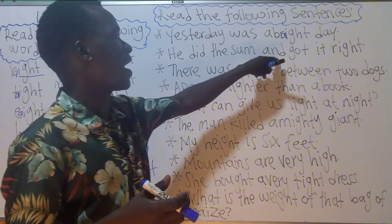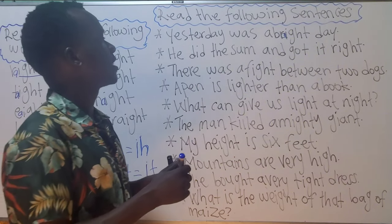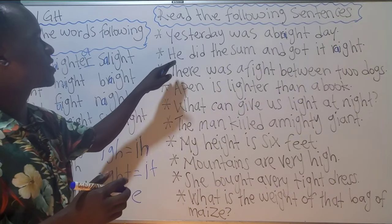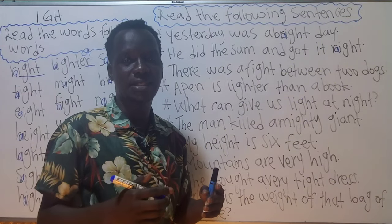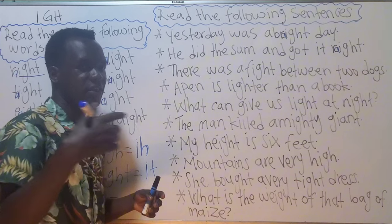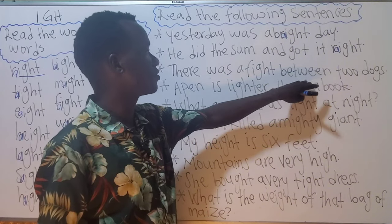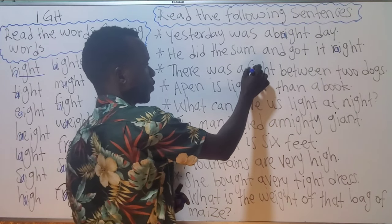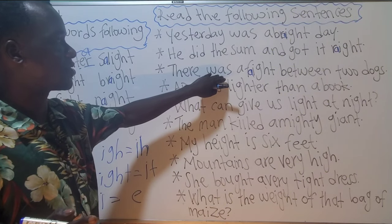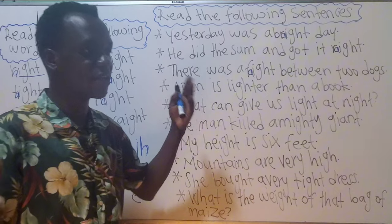Number two: 'He did the sum and got it right.' He did the sum and got it right — invisible A is there. It means he did some mathematics and passed; everything was correct. Number three: 'There was a fight between two dogs' — invisible A is also here. This is a past tense sentence meaning the two dogs were fighting, maybe yesterday evening.